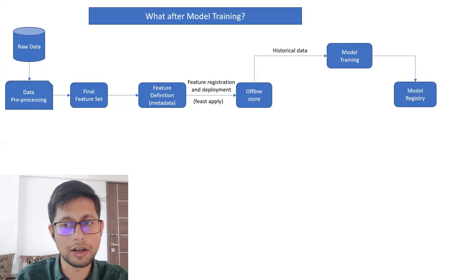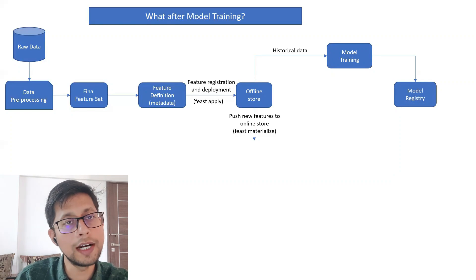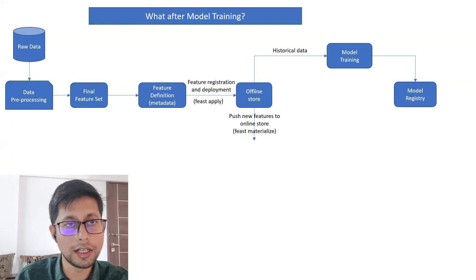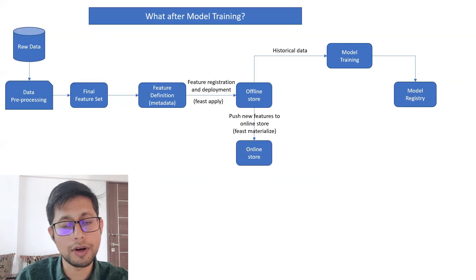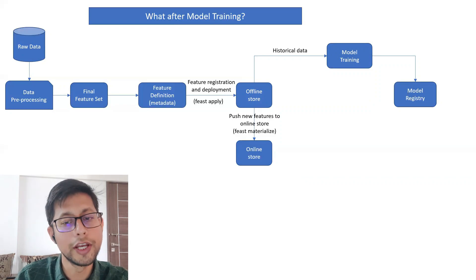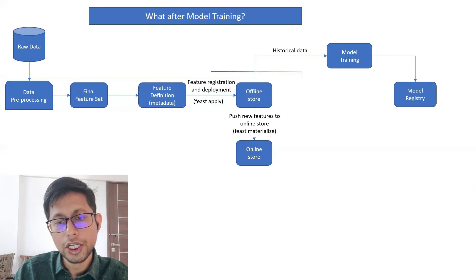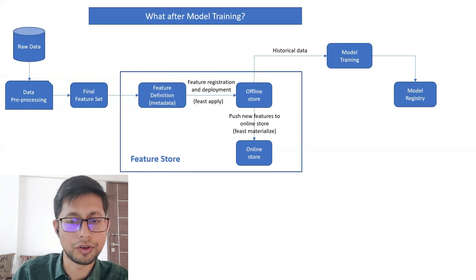Once you are satisfied with the model, you register it in the model registry. Now the model is registered and we start model serving by deploying it. The model will serve on new data — not training data — so the feature store provides an online store for that. Whenever new data comes in, you push it from the offline store to the online store. In FEAST, this process is called materialization — using 'feast materialize' — which pushes new features based on timestamp to the online store.